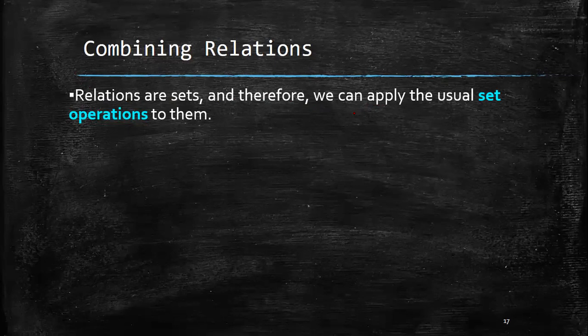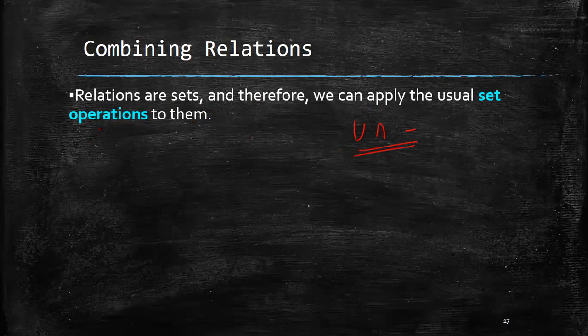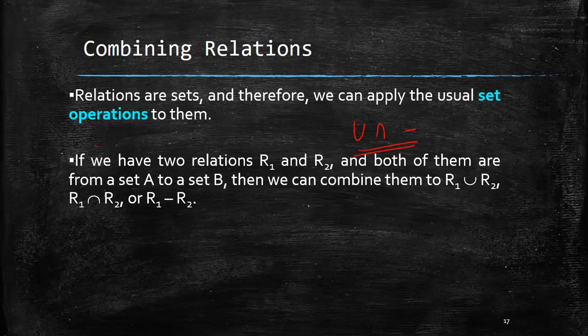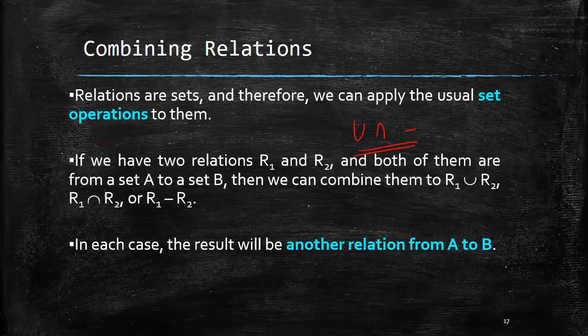Relations are sets and therefore we can apply the usual set operations on them. Because relations from A to B are subsets of A cross B, two relations from A to B can be combined in any way. We have already studied union, intersection, and difference operations in unit 1, and we can apply the same operations on relations. If we have two relations R1 and R2 both from set A to set B, we can combine them as R1 union R2, R1 intersection R2, or R1 minus R2.